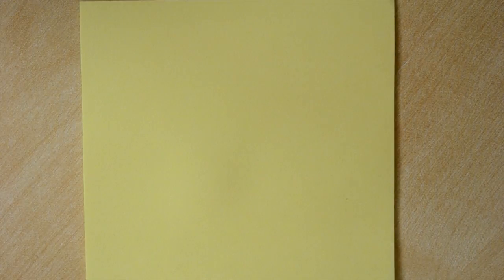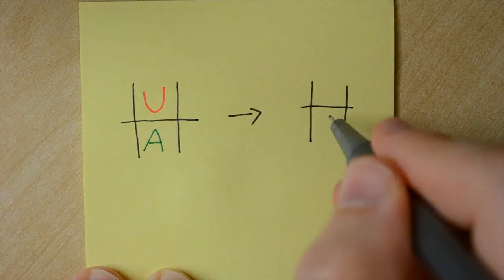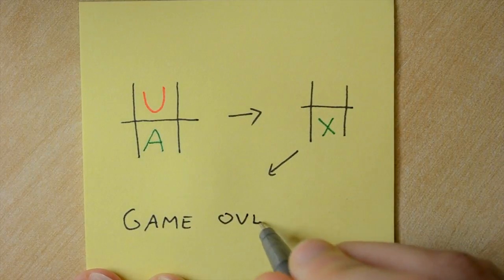If a U is found above an A, the U is deleted, the A becomes an X, and the game is stopped and the game over screen is triggered to display.